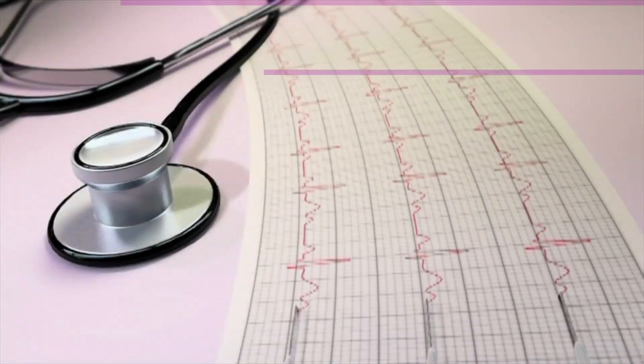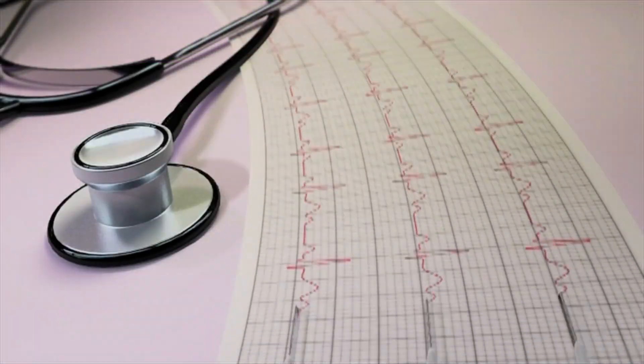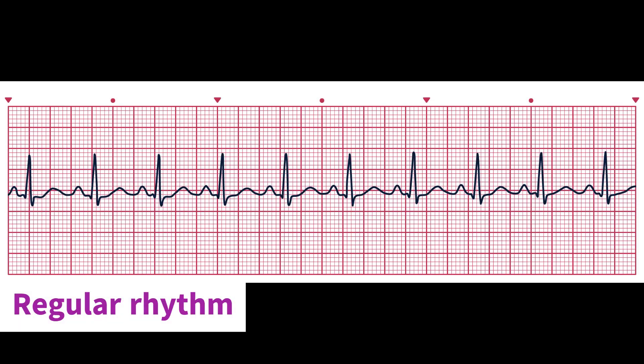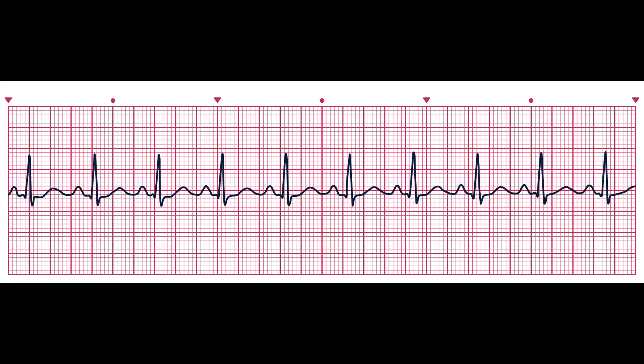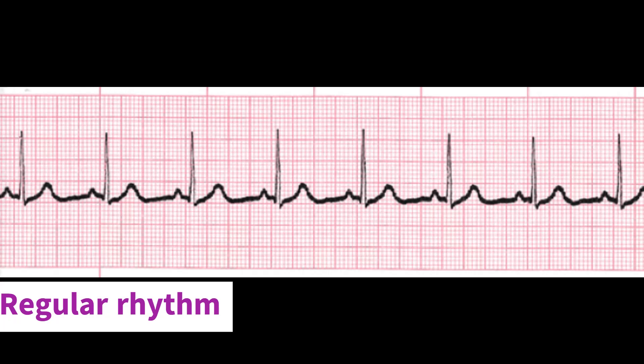Here are examples of regular and irregular rhythms. This is undoubtedly regular in rhythm. When you measure the R-R intervals from one QRS to the next, they are all equal and consistent. Here's another one which is regular.